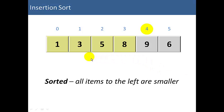As you can see at this point, we've sorted 4 elements, 0 through 3. And you can see that each one of them, the values to its left, are all smaller. So the values to the left of 5 are all smaller than 5. The values to the left of 8 are all smaller than 8.